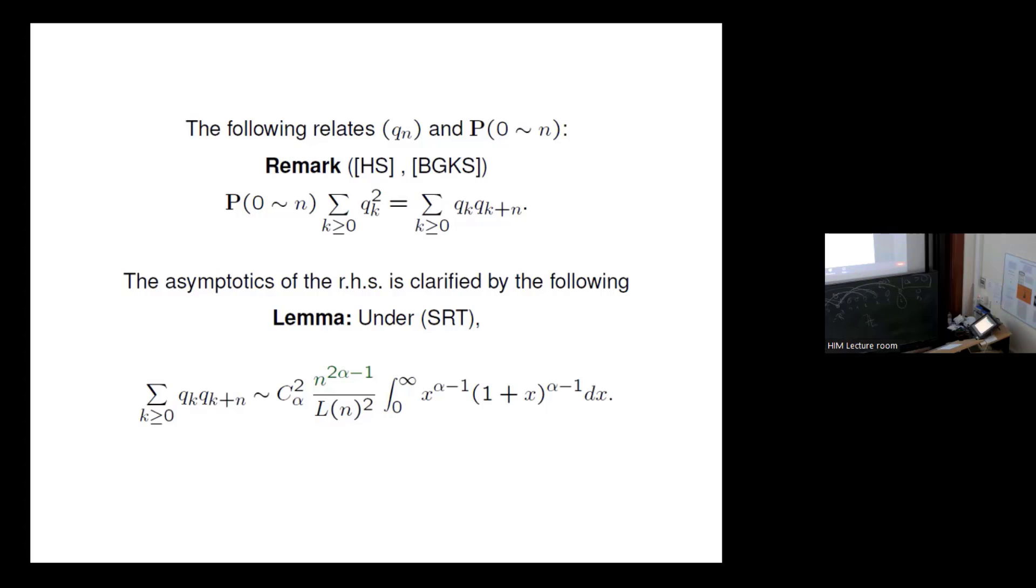And the asymptotics of the right hand side under the SRT condition, it's analysis. Because if we have the tail of the q_n, and then we turn this into a Riemann sum, because of the slowly varying L, it's non-trivial analysis. You have to bring in Karamata's theorem on the slowly varying function. But still, it works out, and we did it.